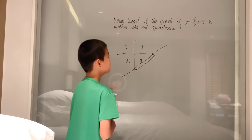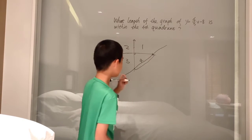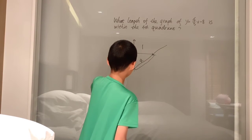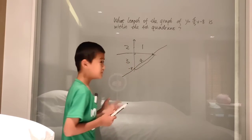Here, the y-intercept is just negative 8, which is b. So, this point down here is negative 8.